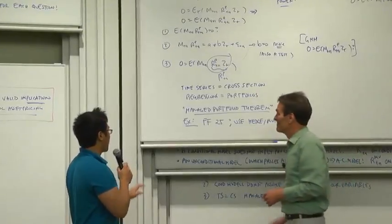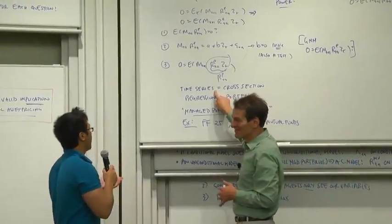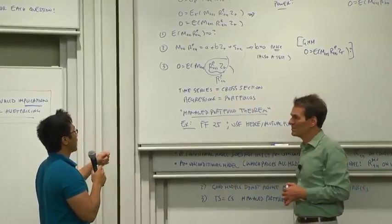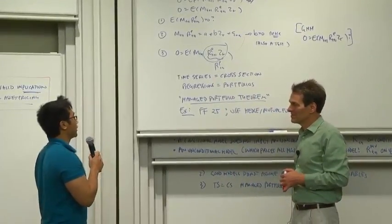You mentioned that the time series and cross sections are the same, but in terms of actually testing this, how would you write out the regression equations that you would be testing?